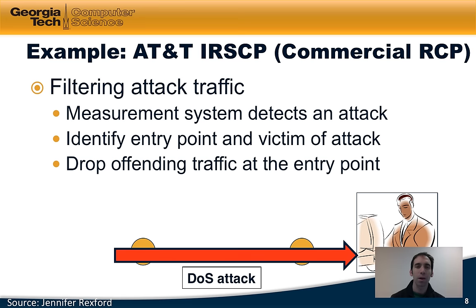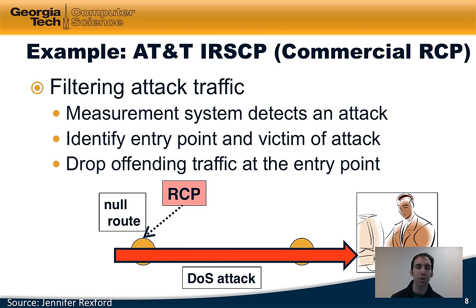As another example, suppose that an attacker is sending denial-of-service attack traffic to a victim. In this case, it can sometimes be difficult to squelch that traffic near the source. One approach that AT&T has taken is to separate the data plane — the routers that forward the traffic — from the control plane that makes decisions about what to do with particular traffic flows. In particular, they've deployed something called the IRSCP, which is a commercial version of the RCP, which will insert a null route into a router for particular flows or destinations that are receiving attack traffic.